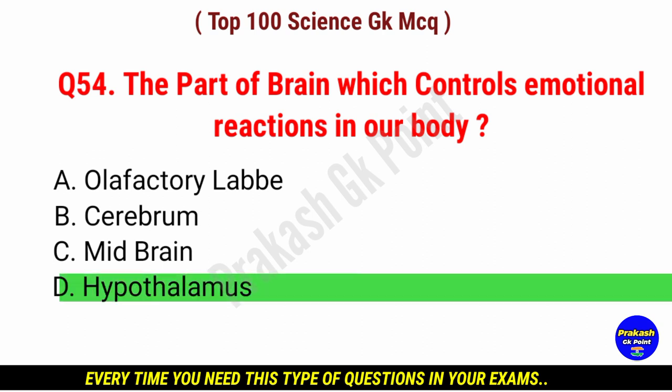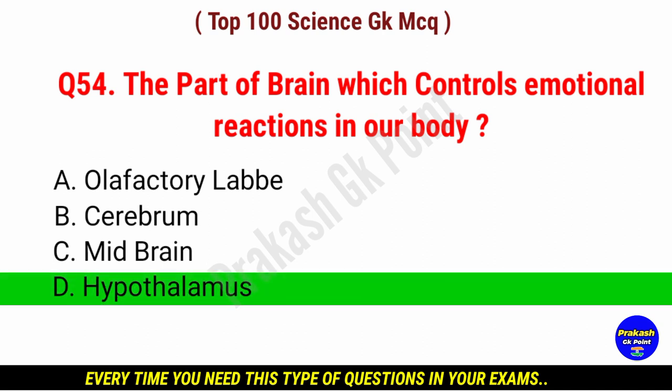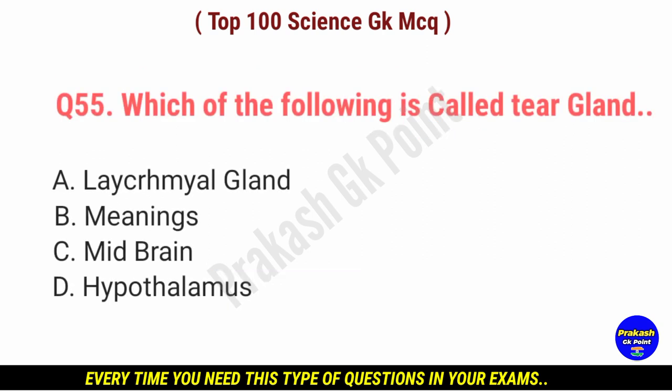The part of brain which controls emotional reaction in our body? Answer: option D, hypothalamus.